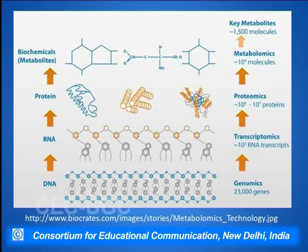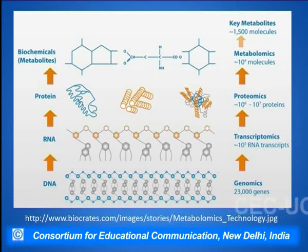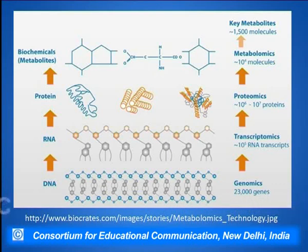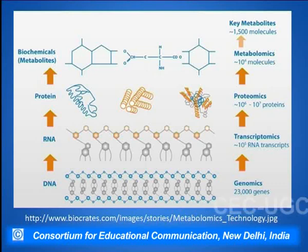The study of the DNA part is referred to as genomics, and it is said that there are about 20,000 to 23,000 genes present in the human system. The study of the RNA is called transcriptomics, while the study of proteins is called proteomics, and the study of biochemicals which are basically the metabolites is called metabolomics.